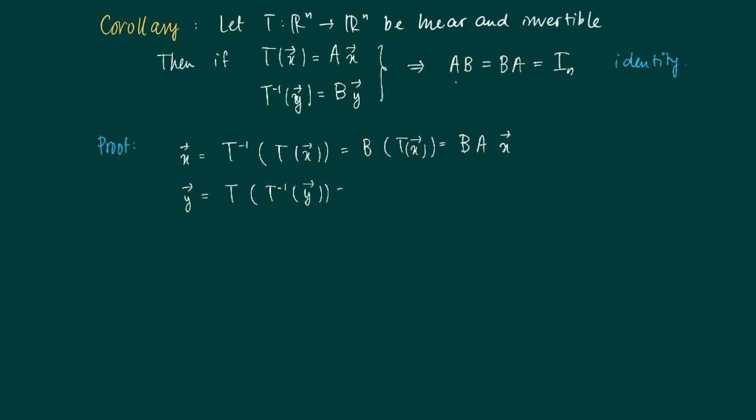we get that Y is no more than T of T inverse Y. And T is A times X, so we get here A times T inverse Y, and T inverse Y equals B times Y.